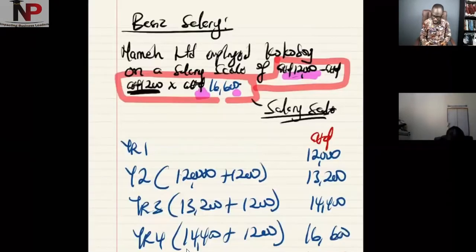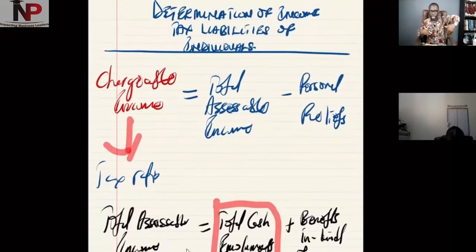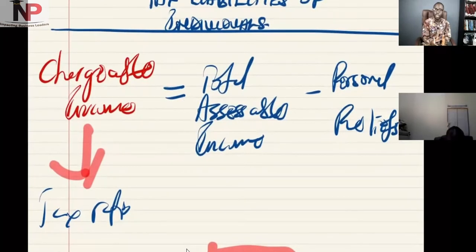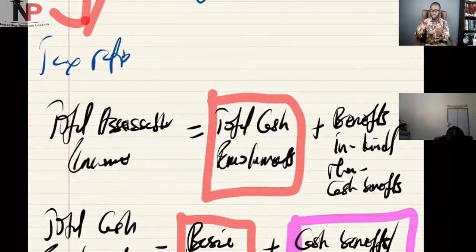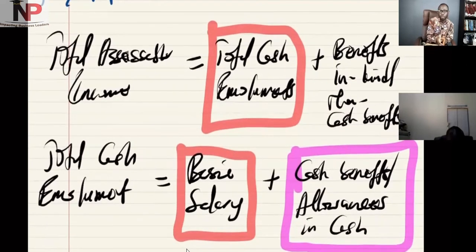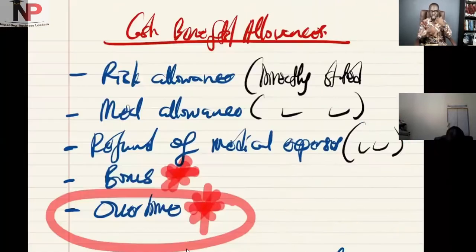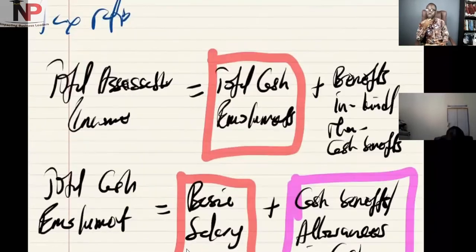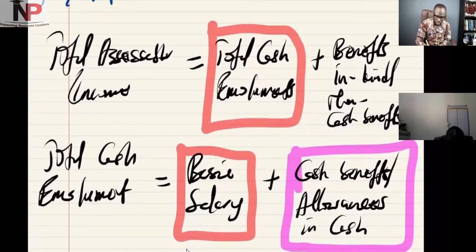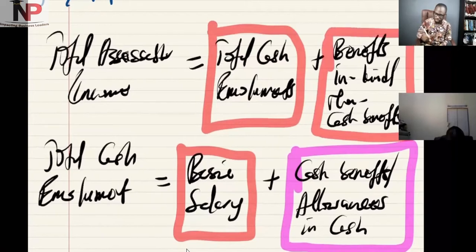So let's go back and make sense of exactly what we're doing. Playback: there is chargeable income. To arrive at that, it is total assessable income minus personal relief. To get total assessable income, it is total cash emolument plus benefit in kind. To get total cash emolument, it is basic salary plus cash benefit. We've looked at how basic salary works and how cash benefits and overtime are treated. Now let's go to the other aspects — benefits in kind.